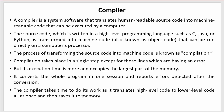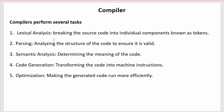Now let us discuss what tasks the compiler performs. The first is lexical analysis — breaking the source code into individual components known as tokens. Tokens are considered the smallest building block in programming. The compiler reads each instruction and breaks it into the smallest components known as tokens, and this work is done by the lexical analyzer.